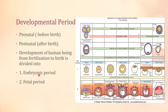The embryonic period is from the time of fertilization till the eighth week of development, which is stage 23 of the embryonic period. The fetal period starts from the ninth week. From the ninth week onward, we don't call it an embryo — we call it a fetus. From the ninth week till birth is the fetal period.